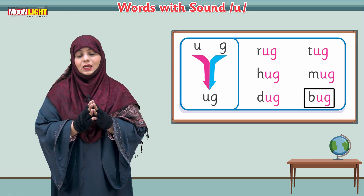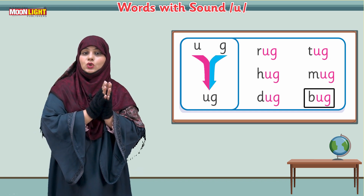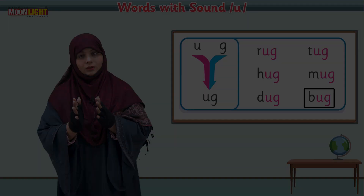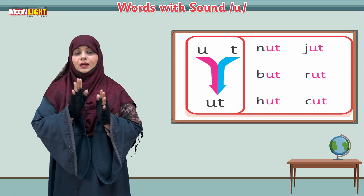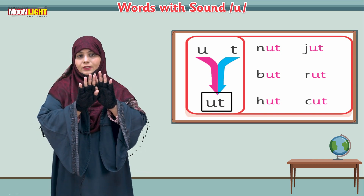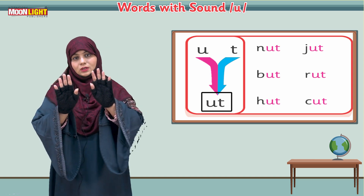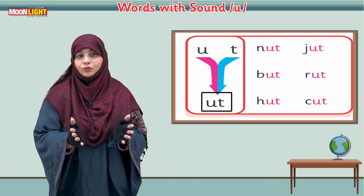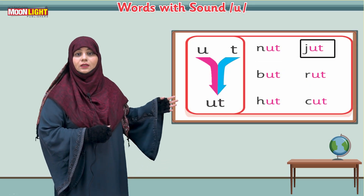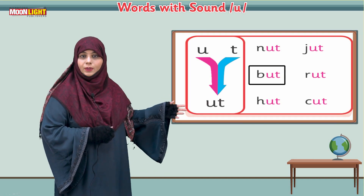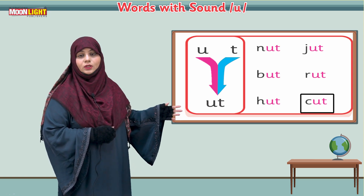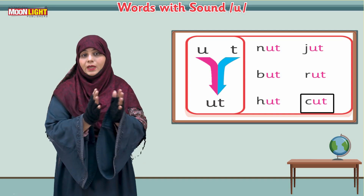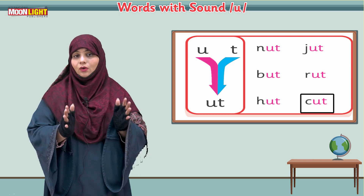Now we are going to join U with another sound — T says 'ut.' When we join U with T, it will be 'ut.' Now make different words with the 'ut' sound: n-ut nut, j-ut jut, b-ut butt, r-ut rut, h-ut hut, c-ut cut. These were the words which we made with the 'ut' sound.